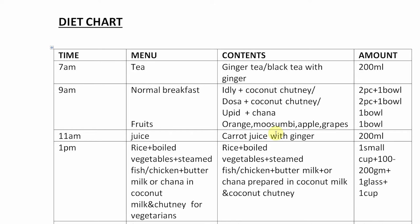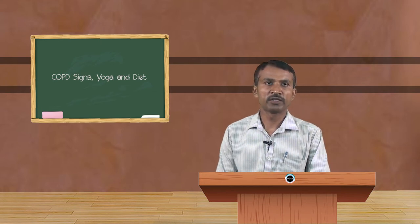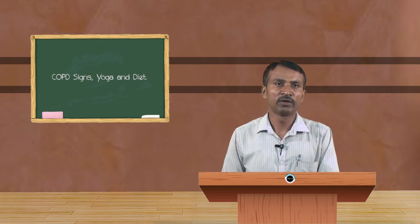At 9 a.m., normal breakfast with contents like idli — not more than two pieces — with coconut chutney or boiled vegetables; or dosa — two dosas with a bowl of vegetables; or upma with coconut-based chutney or boiled vegetable curry. If boiled items are not taken, go for fruits: a big bowl of a mixture of orange, mosambi, apple, grapes, etc., not exceeding 300 to 400 grams. Why vitamin C? It boosts immunity.